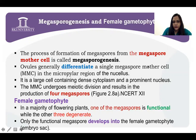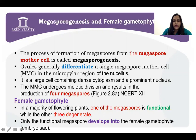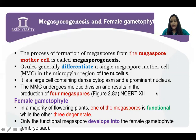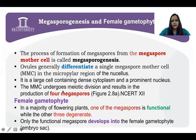Ovules generally differentiate a single megaspore mother cell, in short MMC, in the micropylar region of the nucellus. It is a large cell containing dense cytoplasm and a prominent nucleus. The megaspore mother cell undergoes meiotic division and results in the production of 4 megaspores. Can you tell me what meiotic division is and how many cells are found at the end of meiotic division?